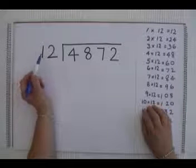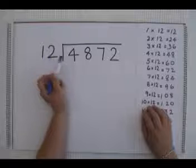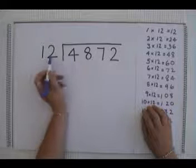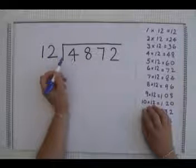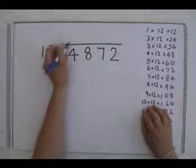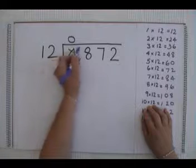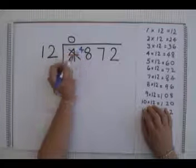We would start by saying, how many times does 12 fit into 4? As 4 is smaller than 12, 12 will not fit into it. So we will put a zero up here, cross out the 4 and carry the 4 to the next column.